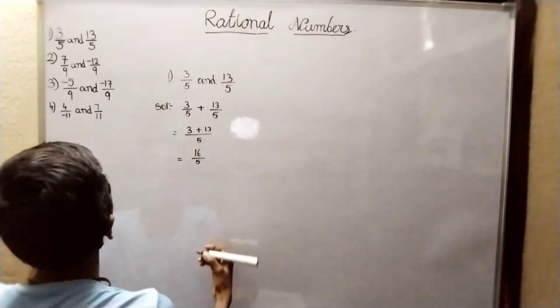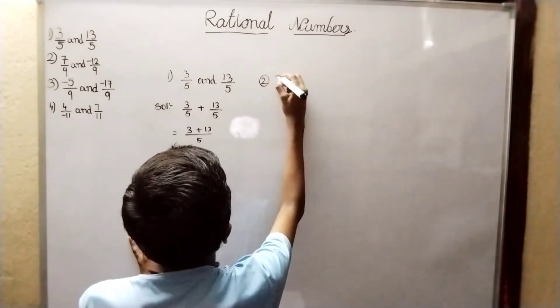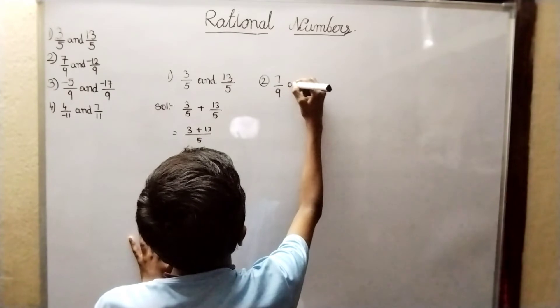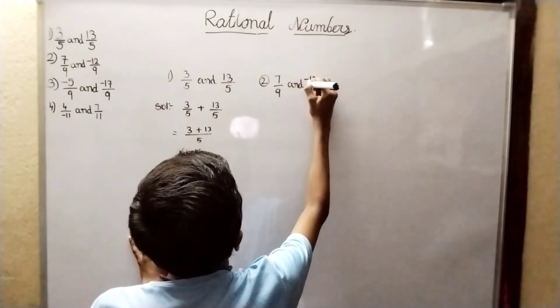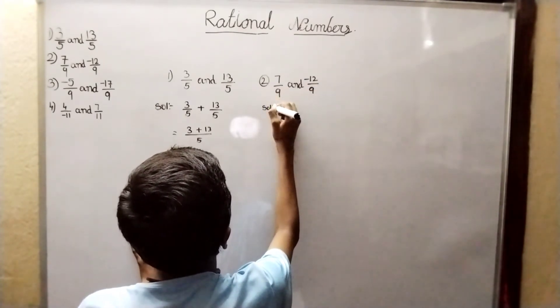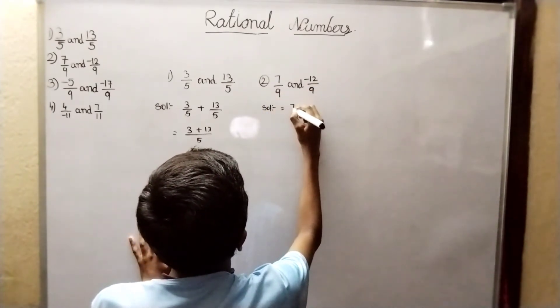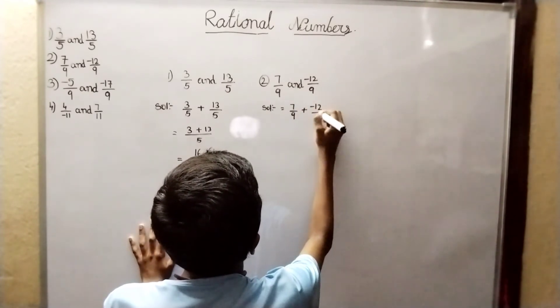Second sum: 7 by 9 and minus 12 by 9. 7 by 9 plus minus 12 by 9.